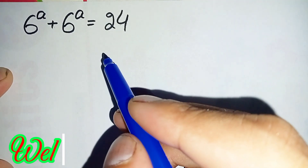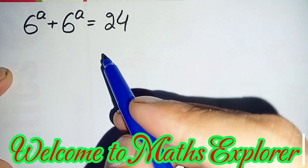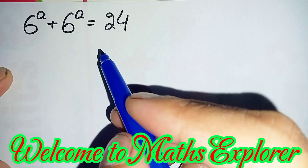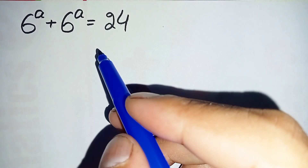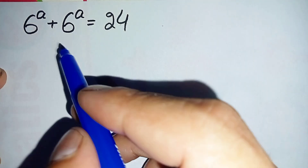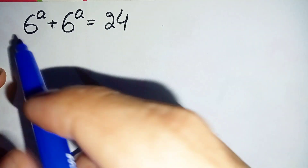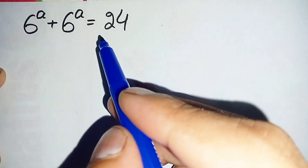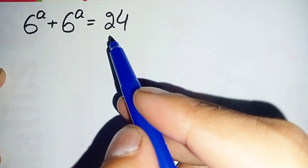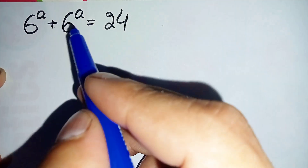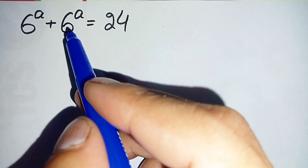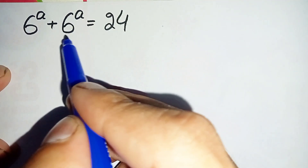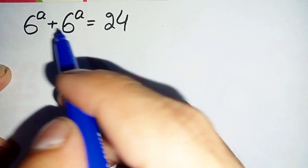Hi everyone, welcome to Math Explorer. In this video I'm going to solve this nice exponential equation: 6 raised to power a plus 6 raised to power a is equal to 24. Here we will try to find the value of a. In the left hand side, this same number is added two times.